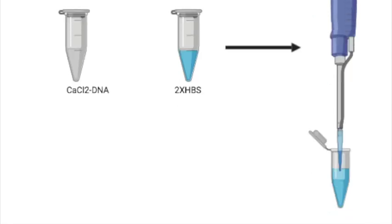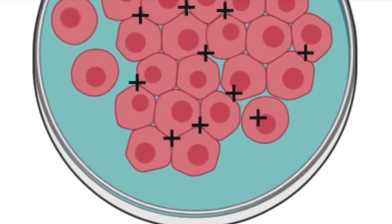The point of aerating the system as you add the two components together is to ensure that you form fine precipitates of DNA calcium chloride rather than clumps, which would be hard to enter the cells.